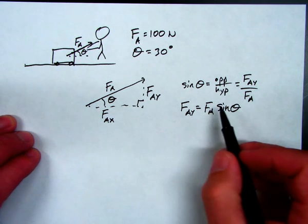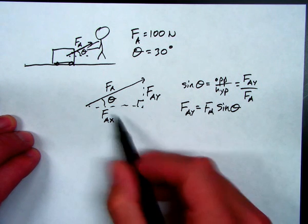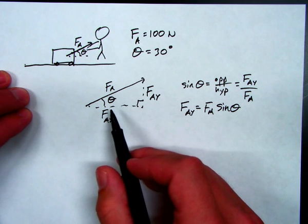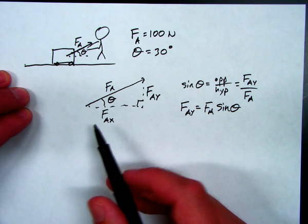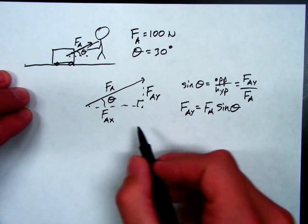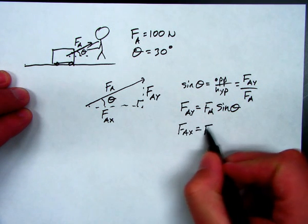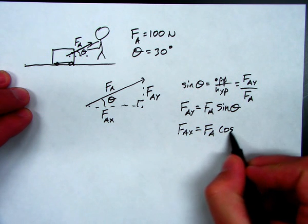Well, similarly, we can derive an expression for FAX. This is the adjacent side. Cosine of theta is adjacent over hypotenuse. So, FAX is simply the applied force times cosine of the angle.